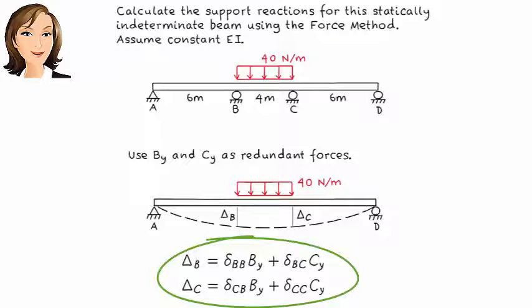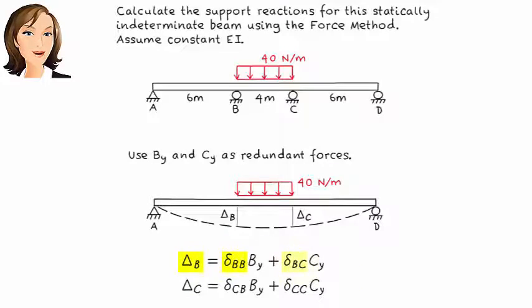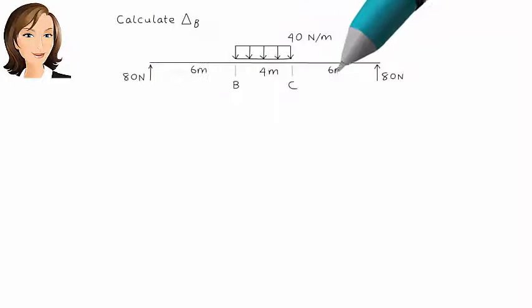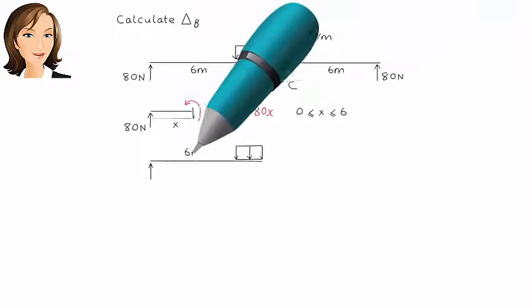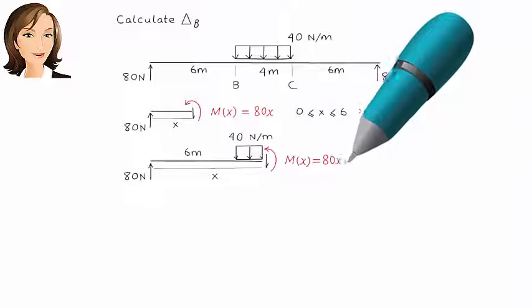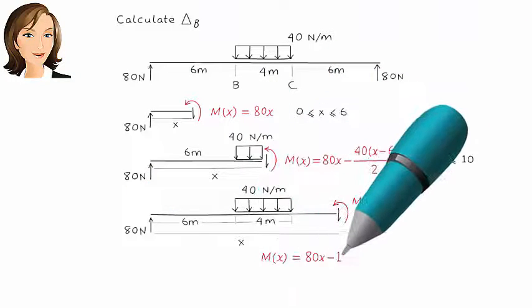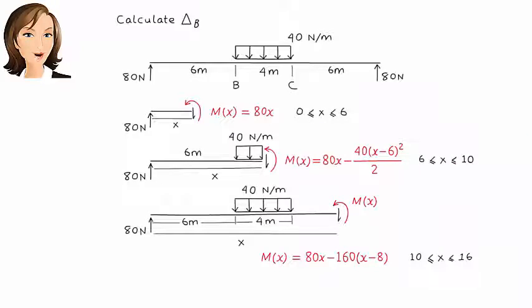To solve for the unknowns, we first need to calculate these displacements. Here is how we calculate delta B. First, we need to write the bending moment equation for the statically determinate beam under the applied load. Here, there are three such equations.